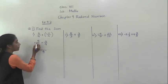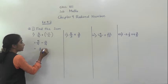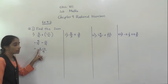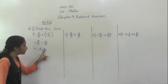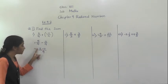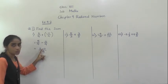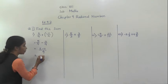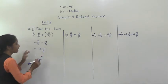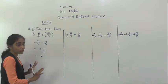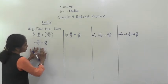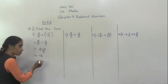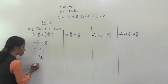Since denominators are same, write the denominator once only. Now we are going to write the numerators: 5 minus 11. For 5 there is a plus sign and for 11 it is a negative sign. Here it is plus and here it is minus. So plus minus gives minus. Subtract 5 from 11, what you will get? 6.